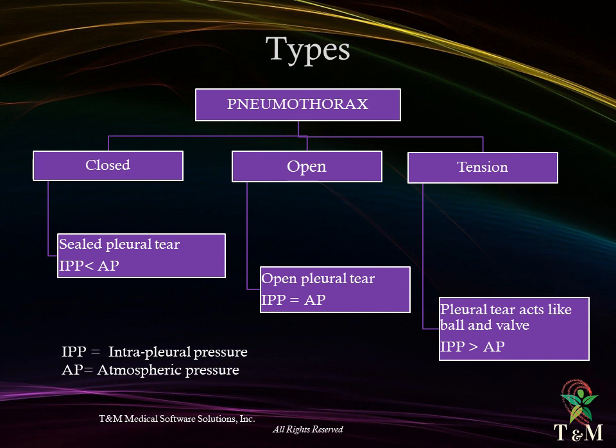Types of pneumothorax could be closed — there is a sealed pleural tear with intrapleural pressure less than atmospheric pressure — or open type, in which there is an open pleural tear and intrapleural pressure equals atmospheric pressure. Last is tension pneumothorax, where there is a pleural tear acting like a ball and valve, with intrapleural pressure greater than atmospheric pressure.